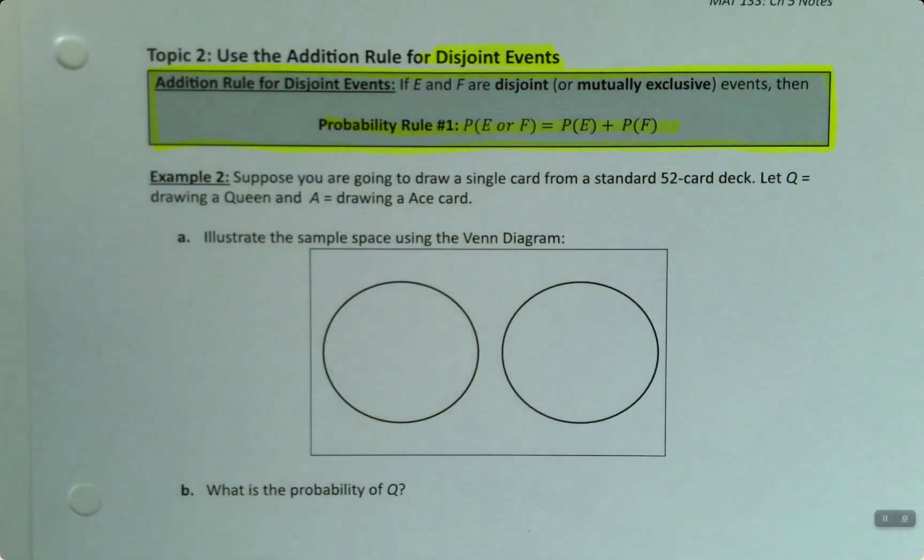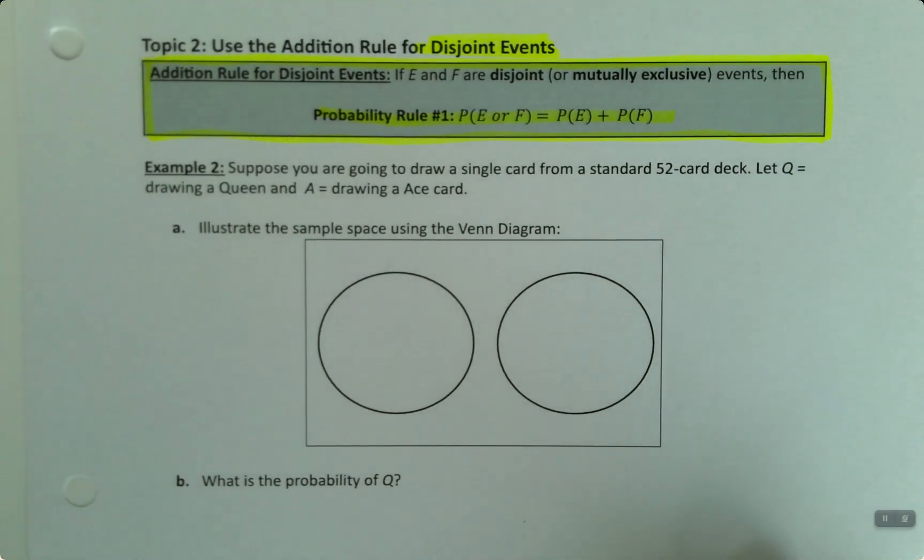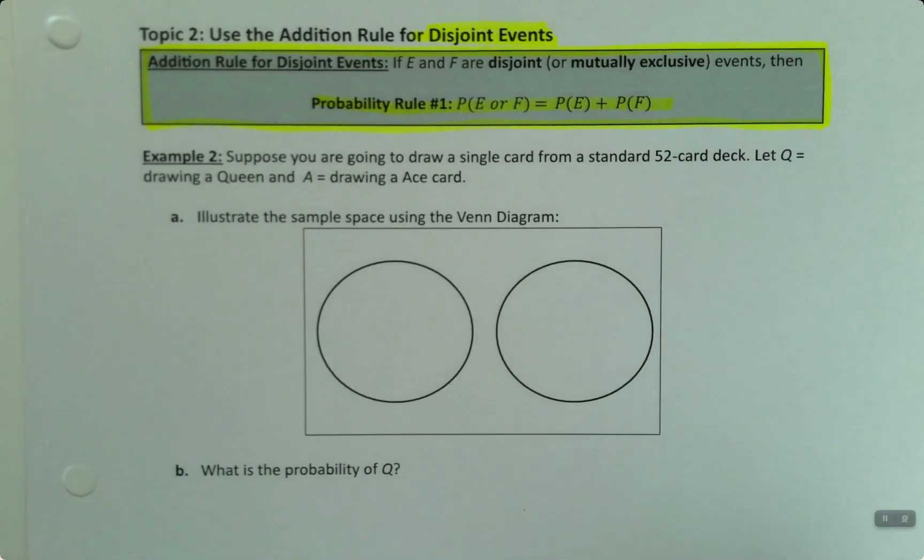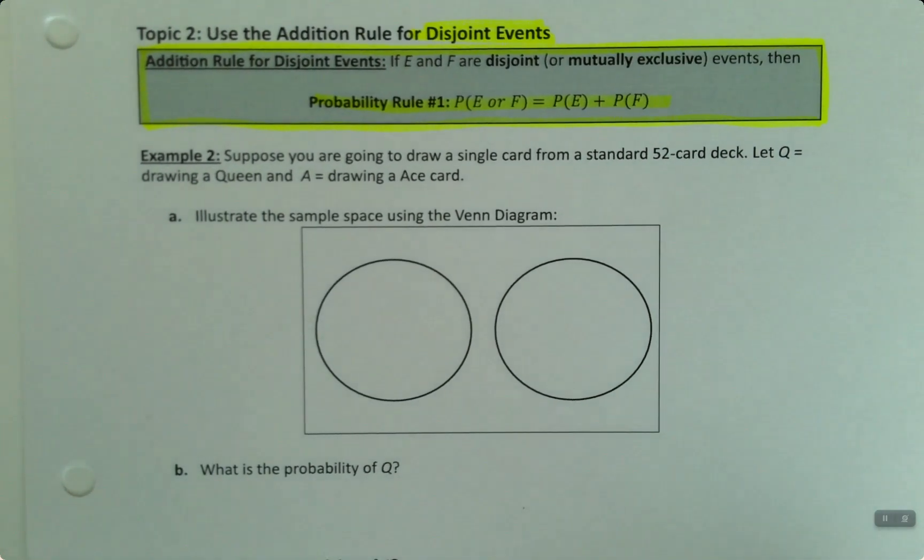It says that if E and F are disjoint, or mutually exclusive events, then the probability of E or F is equal to the probability of E plus the probability of F. Let's see how this works in practice. Suppose you're going to draw a single card from a standard 52 card deck. Let Q be drawing a queen and A equal drawing an ace. And then they want us to create a Venn diagram for that.